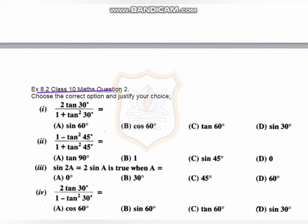The next question says: choose the correct option and justify your answer. Question 1: 2tan30 upon 1 plus tan²30. We put in the value of tan30. For question 2, using tan45 equals 1: 1 minus 1² upon 1 plus 1 gives 0 over 2, so the answer equals 0.